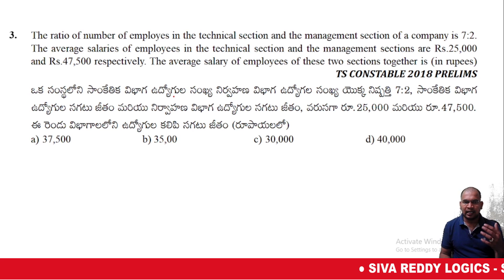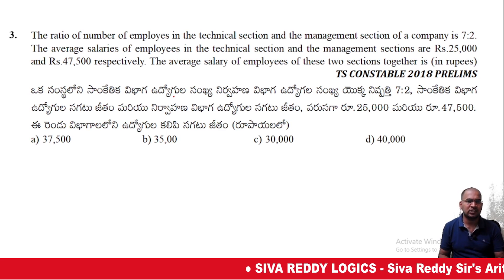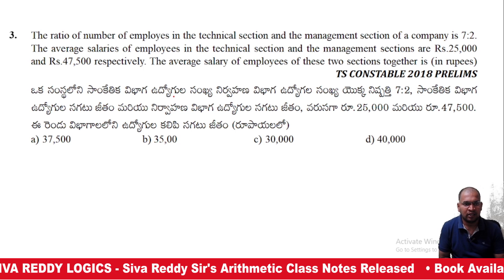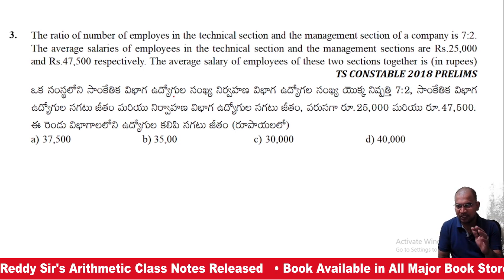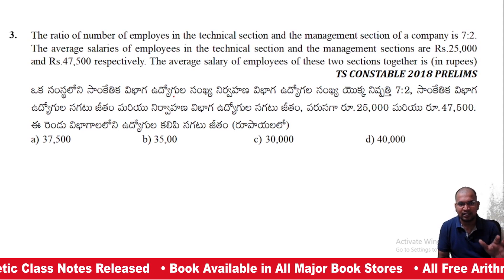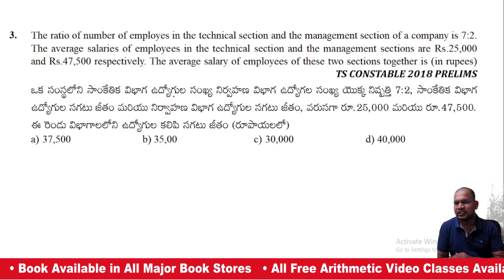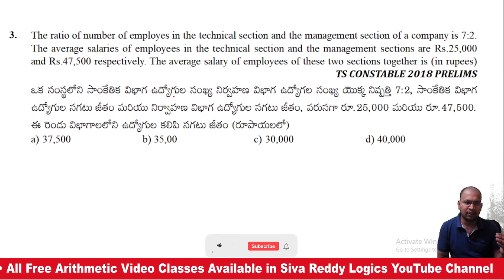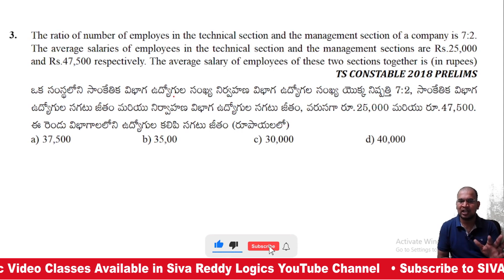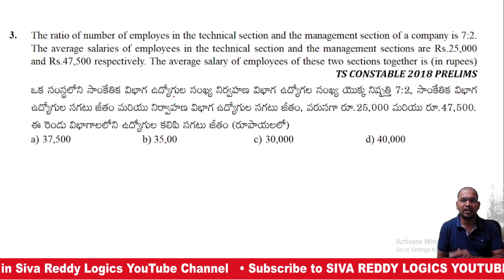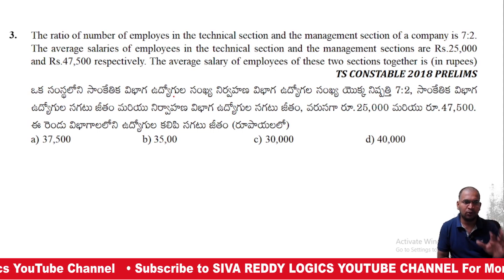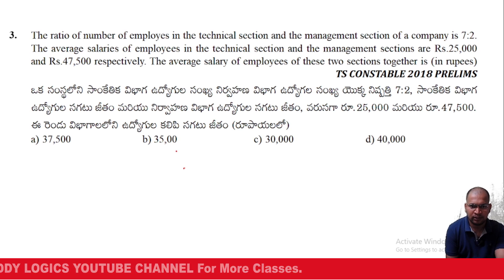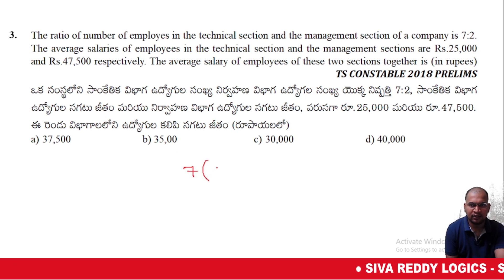The ratio of number of employees in the technical section and management section is 7:2. The average salaries of employees in the technical section and management section are 25,000 and 47,000 respectively. Find the average salary of employees of these two sections together.